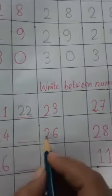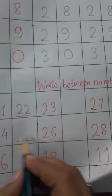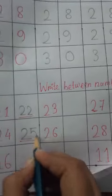2, 4, 24, 26, 26. What comes between? The between number is 2, 5, 25.